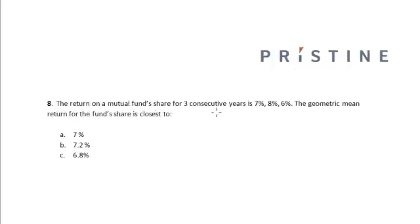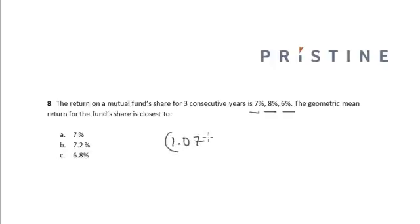The return on a mutual fund's share for three consecutive years is 7%, 8%, and 6%. The geometric mean return for the fund's share is closest to what value? To find the geometric mean return, we have to find the value of the share at the end of three years.